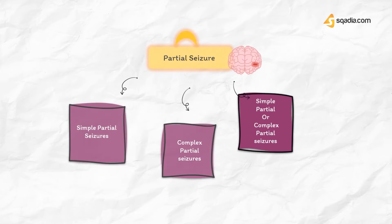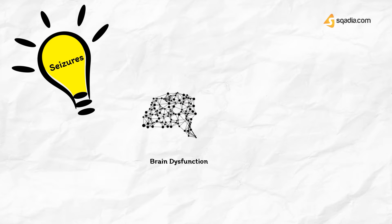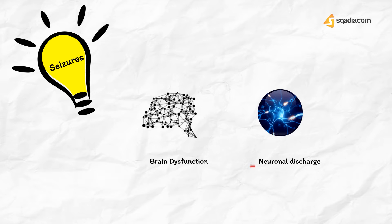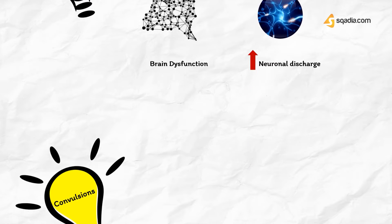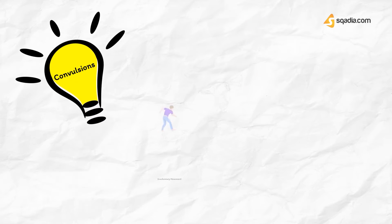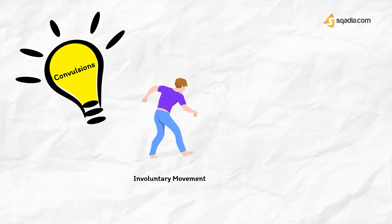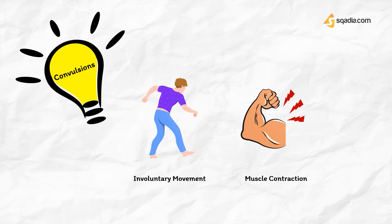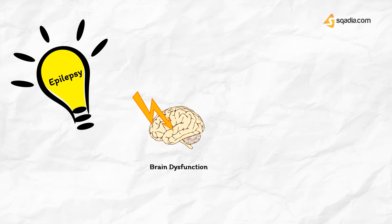For easy learning, let's understand the difference between seizure, convulsion, and epilepsy. A seizure is an episode of brain dysfunction due to abnormal discharge of cerebral neurons. Convulsions are involuntary, violent, and spasmodic or prolonged contraction of the skeletal muscle. Epilepsy is a disease due to disorder of brain function characterized by episodes of seizures.